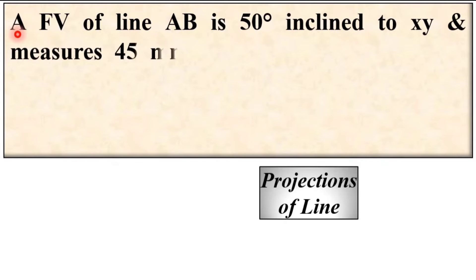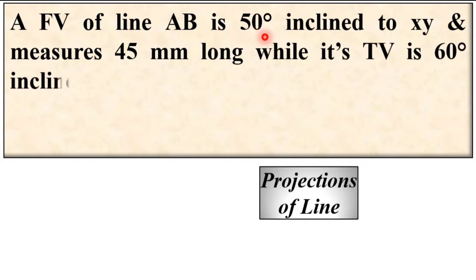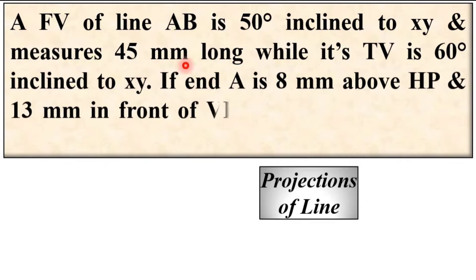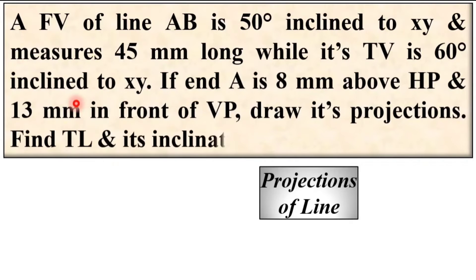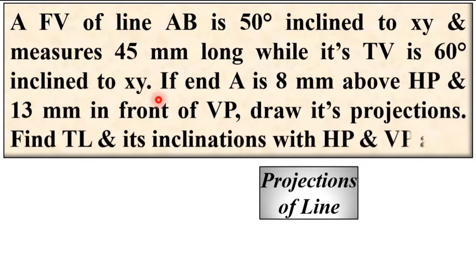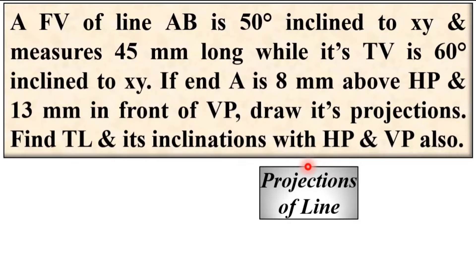Look at the description. The front view of line AB is 50 degrees inclined to XY and measures 45 mm long, while its top view is 60 degrees inclined to XY. Point A is 8 mm above HP and 13 mm in front of VP. Find the true length and its inclination with HP and VP.